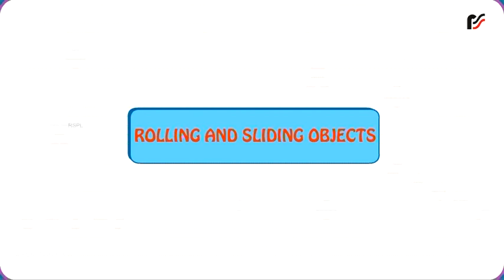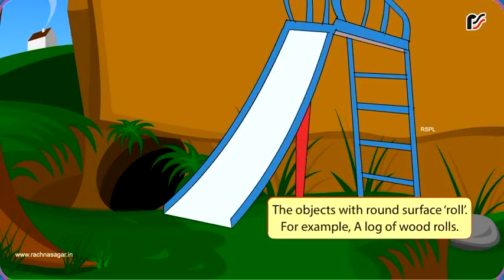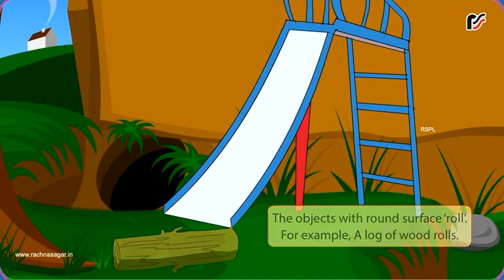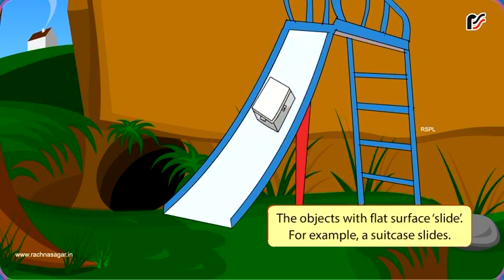Rolling and sliding objects. The objects with round surface roll. For example, a log of wood rolls. The objects with flat surface slide. For example, a suitcase slides.